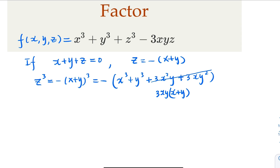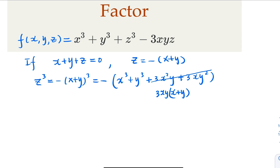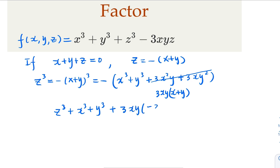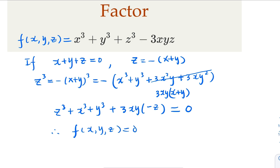So we're going to move everything on the right-hand side to the left of the equation. What we get is z cubed plus x cubed plus y cubed plus — now, since x plus y equals negative z — plus 3xy times negative z, and this whole thing is 0. Notice that the left-hand side is nothing but f, so f(x, y, z) equals 0.